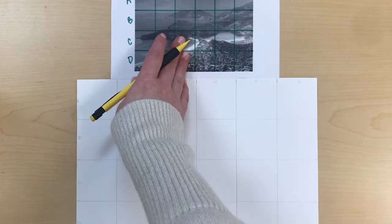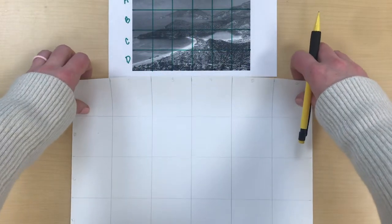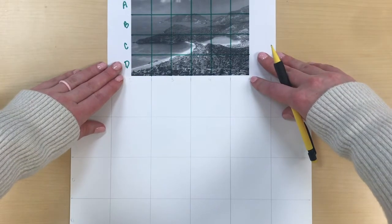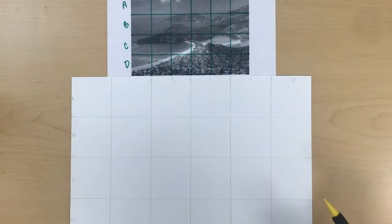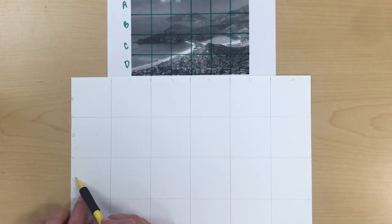Alright and now looking at that photo, I'm gonna use my grid to help me line up some of those landscape features. So the edge of an island in my piece is in column one block C. I'm gonna find that same place on my grid.